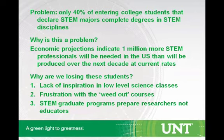The major problem I'm trying to address: only 40% of entering college students who declare STEM disciplines actually finish those degrees. The economic projections over the next decade indicate we need significantly more STEM graduates than we're going to produce. So we have to figure out ways of retaining these students in STEM. The first reason we're losing these students is lack of inspiration in low-level science classes, and there's also a lot of frustration with weed-out courses. My organic chemistry class is considered one of these. It's generally accepted that the first two years are where we lose most STEM students.